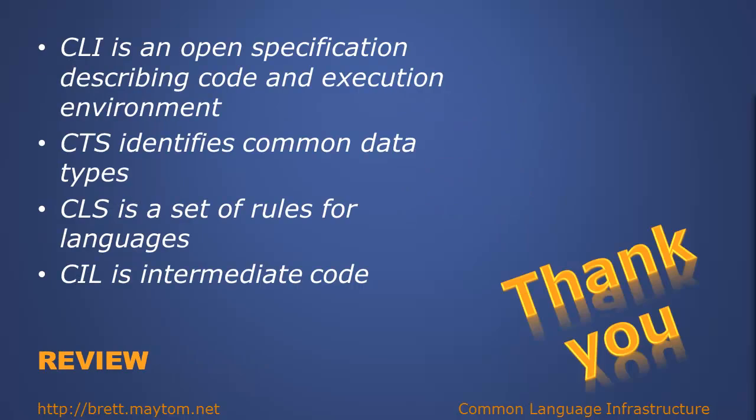In review: The common language infrastructure is an open specification describing how code executes and looks within an environment. The common type system identifies common data between languages. The common language specification is a set of rules that languages need to comply with. The common intermediate language is intermediate code that a language is compiled to, and this CIL code is then executed by the common language runtime.